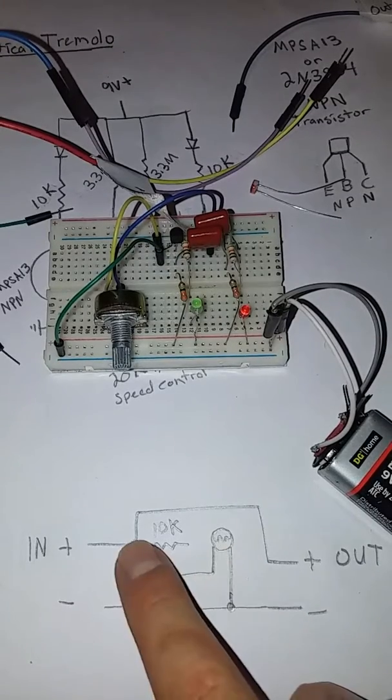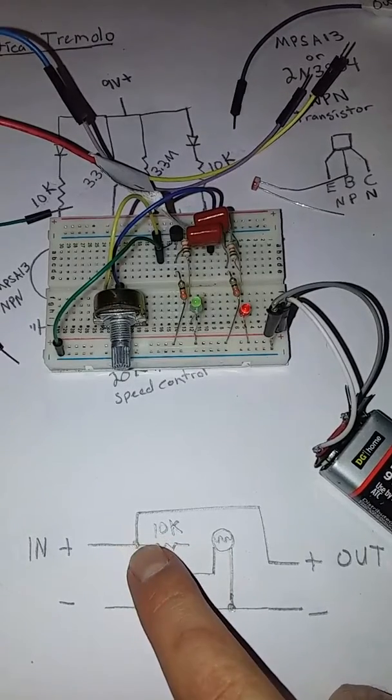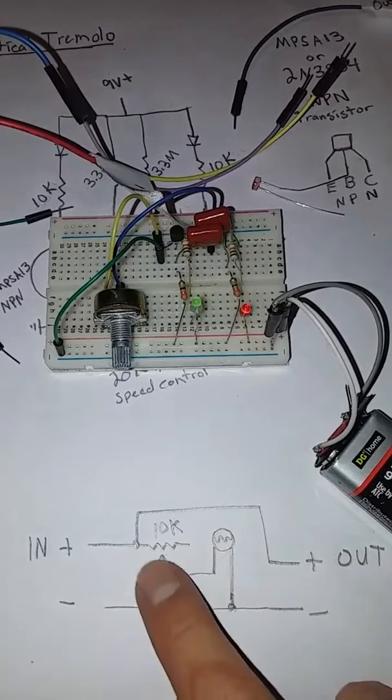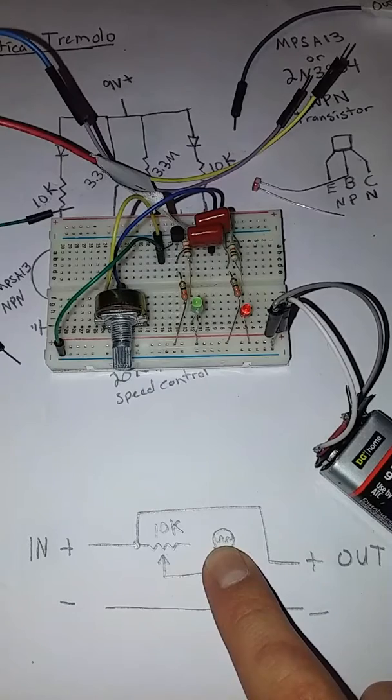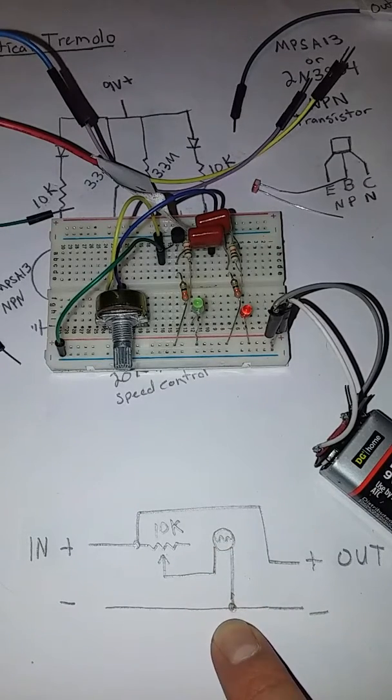So we're using this 10k potentiometer as a variable resistor to change the resistance between the input here and this photoresistor. This photoresistor itself is a variable resistor, and the other end of the photoresistor hooks into our negative.